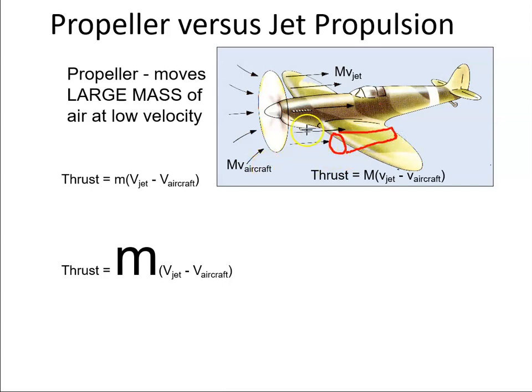The air coming into the jet engine will be a small mass of air because we have a small area here. Whereas on the propeller we have this large area, so we can have a larger mass of air. We get a large mass of air from a propeller.